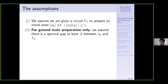In order to make this problem tractable, we need to add some assumptions. The first assumption is that we are given a circuit U_I that prepares an initial state phi_0, and this phi_0 has an overlap with the exact ground state psi_0 that is lower bounded by a parameter gamma. For our state preparation algorithms, we will need a further assumption: that the spectral gap between the ground energy and the first excited state energy is lower bounded by a parameter delta.